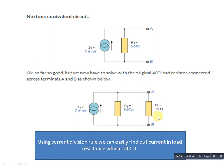The question asks to find current in the 40 ohm branch. We can find this using the current division rule. The current division rule states: the current in a branch equals the opposite branch resistance divided by (sum of both resistances), multiplied by the total circuit current. Total current is 2 ampere, so the equation becomes: (6.67 / (6.67 + 40)) × 2. You can easily find the current in the AB branch.